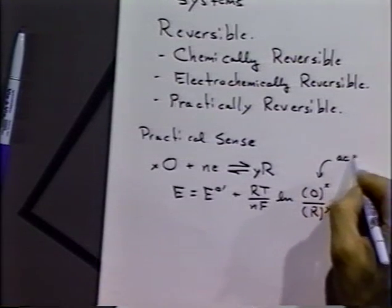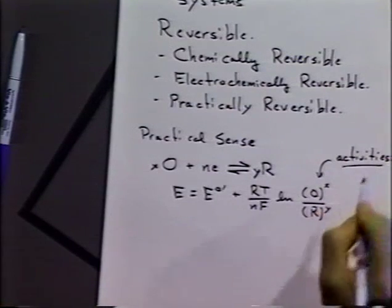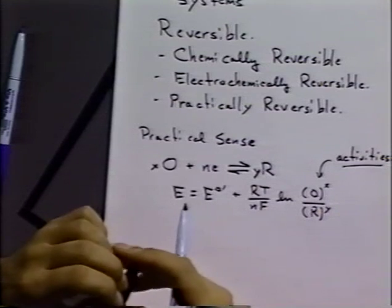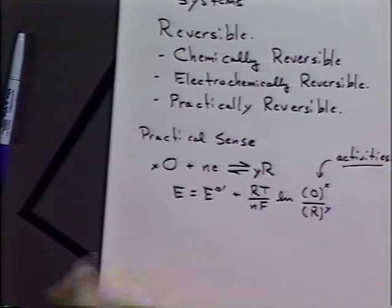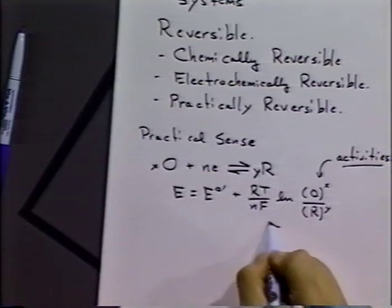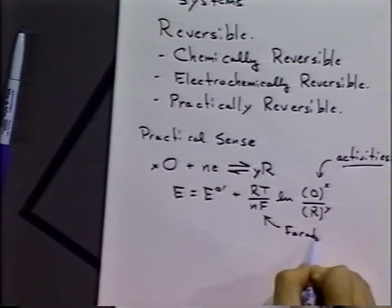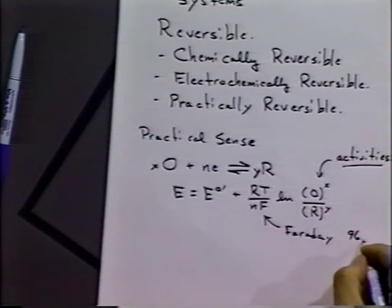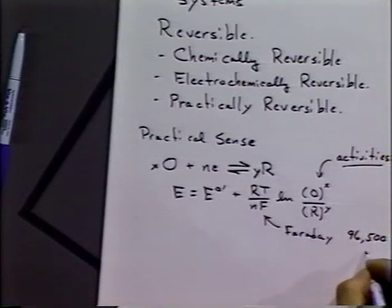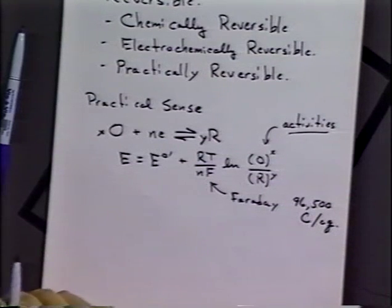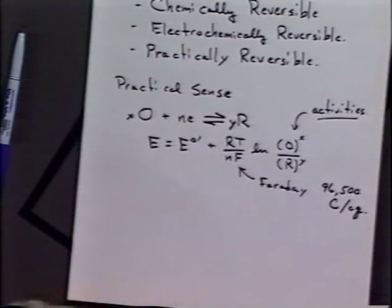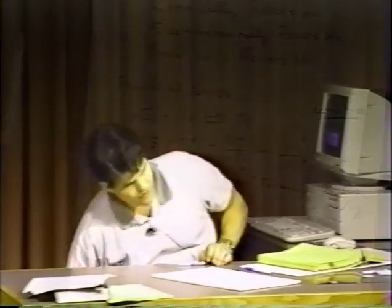As I said, these are activities. Often, if we have a sufficiently dilute solution, we can substitute in concentrations without any worries. And this part, RT over F, R is the gas constant, T is the absolute temperature, and F is the Faraday. We've mentioned the Faraday before, and it has a value of 96,500 coulombs per equivalent or per mole would be another way of saying it. So, in a practical sense, if we have a system that gives us a cell potential that follows the Nernst equation, that gives us the proper potential according to the Nernst equation, we'll call that a practically reversible system.